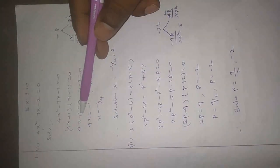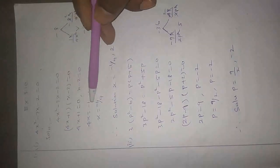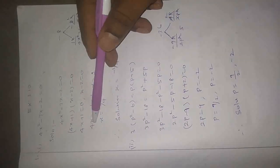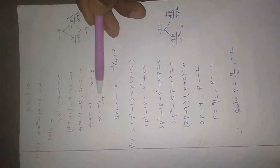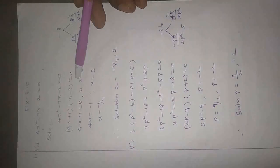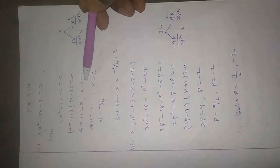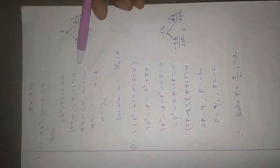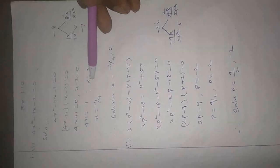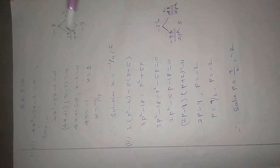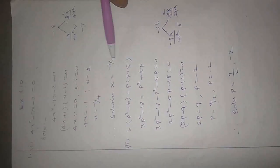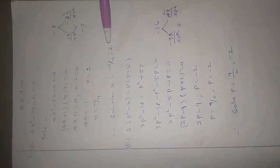4x equals minus 1 after moving plus 1 to that side. Divide by 4, so x equals minus 1 by 4. Second factor: x minus 2 equals 0 — minus 2 converts to plus 2 on that side, so x equals 2. Therefore, the solution of x is equal to minus 1 by 4 comma 2.